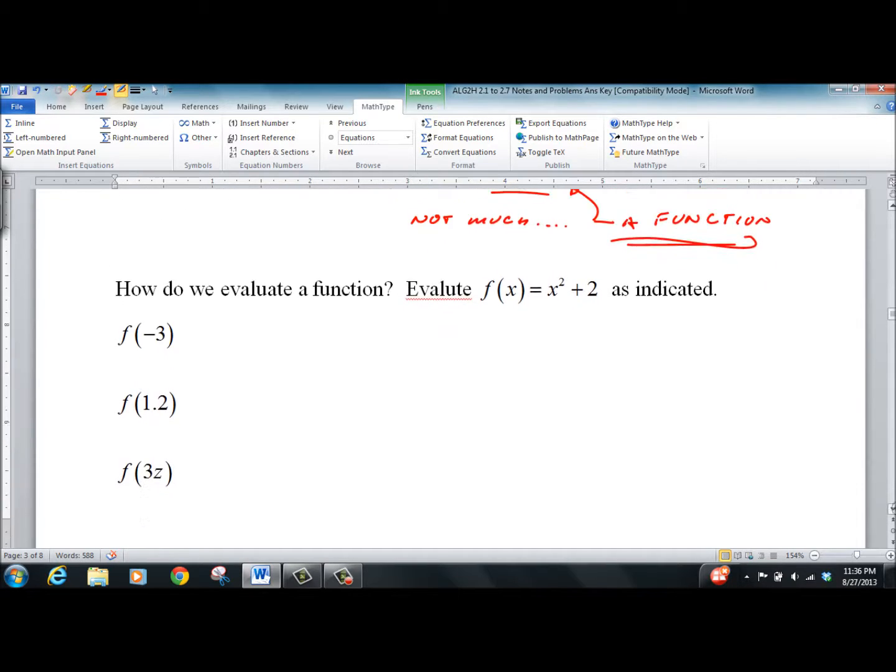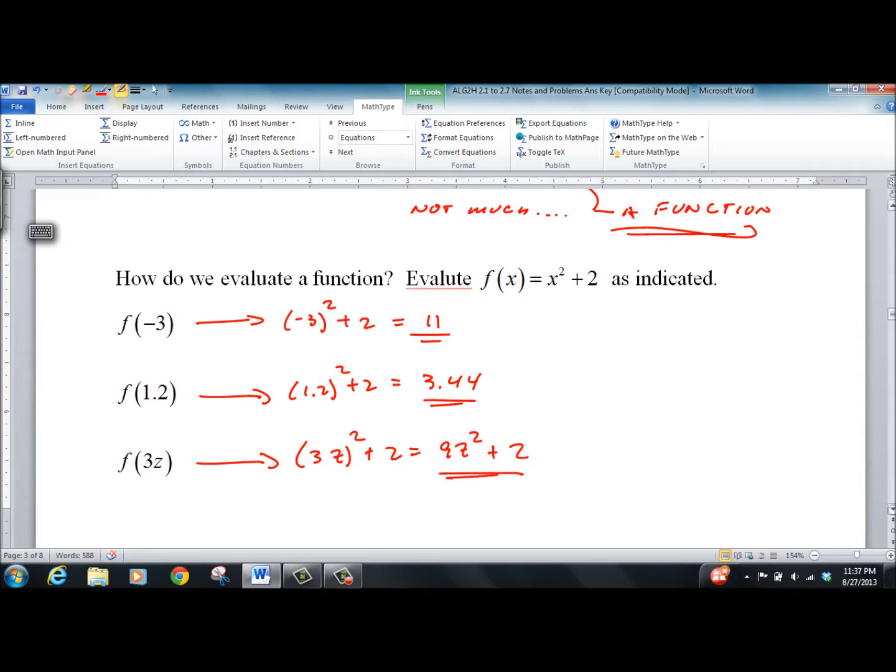So, how do you evaluate a function? So, you've got to plug in negative 3. So, you'd get negative 3 squared plus 2 is 11. f of 1.2 is 3.44. 3z squared is 9z squared plus 2. That's about it.